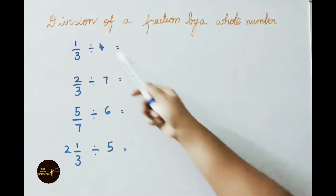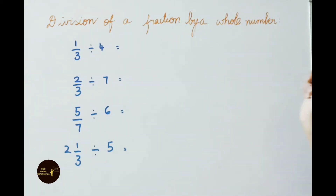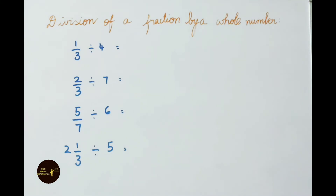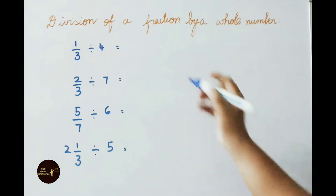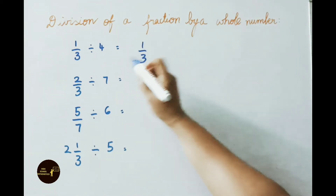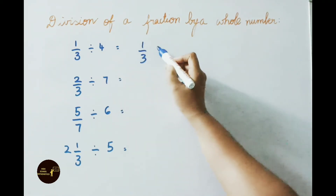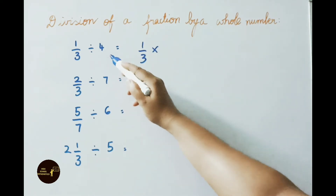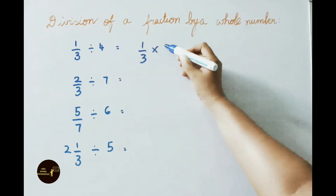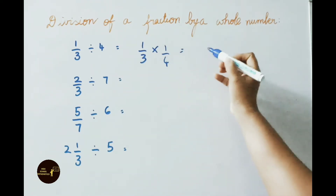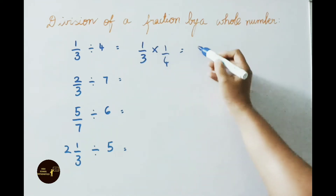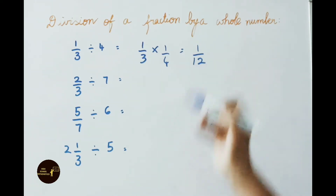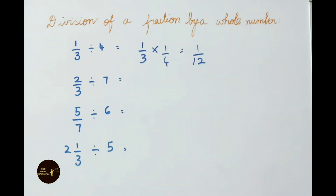See next: division of a fraction by a whole number. See the first sum: 1/3 divided by 4. Write down 1/3 × reciprocal of the second number 4, which is 1/4. Multiply numerators: 1 × 1 = 1, denominators: 3 × 4 = 12. So the answer is 1/12.